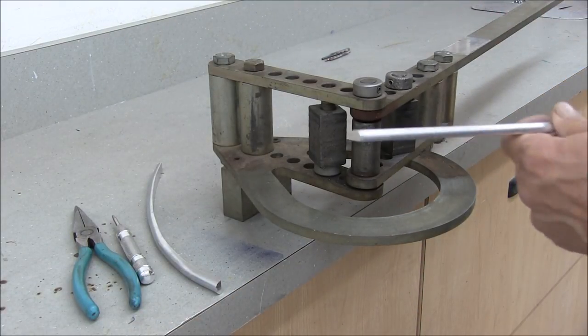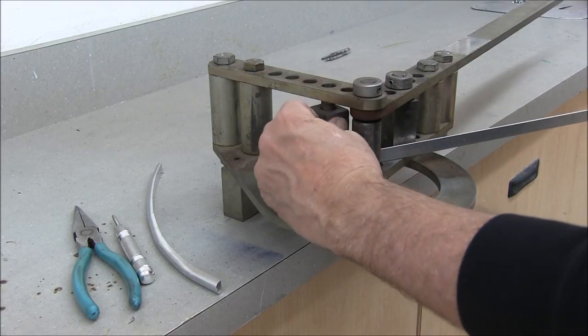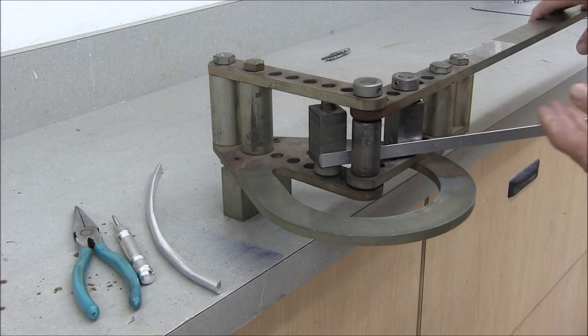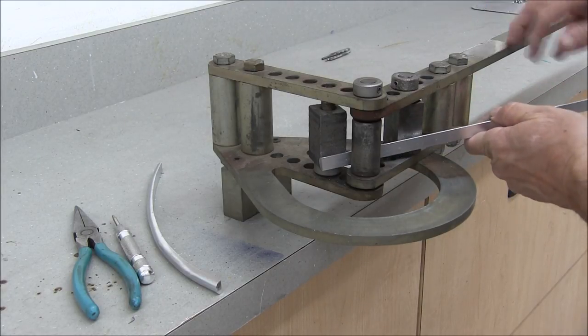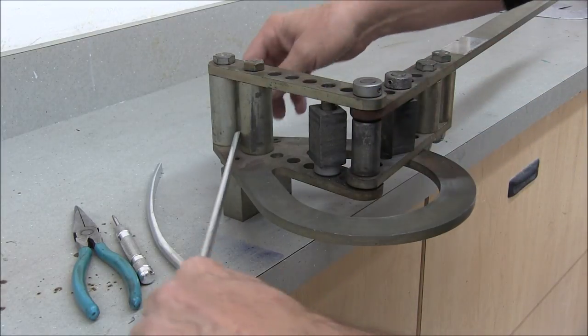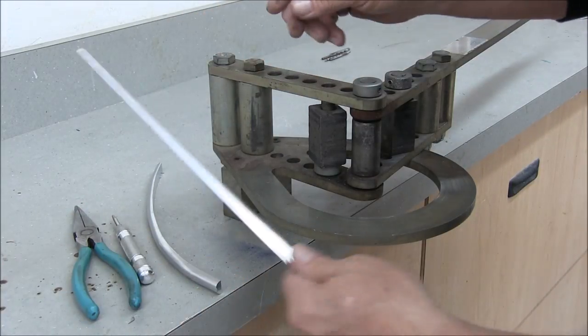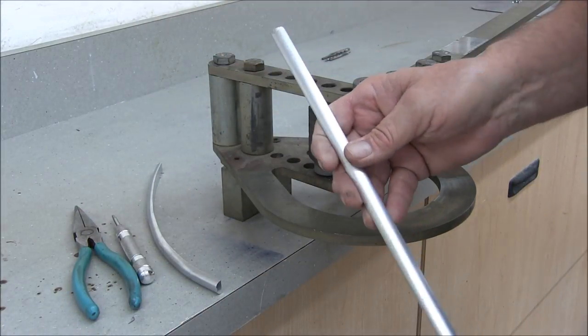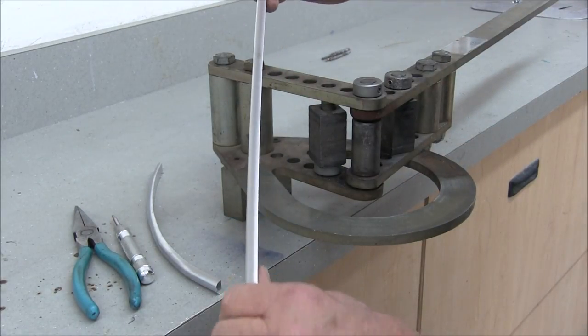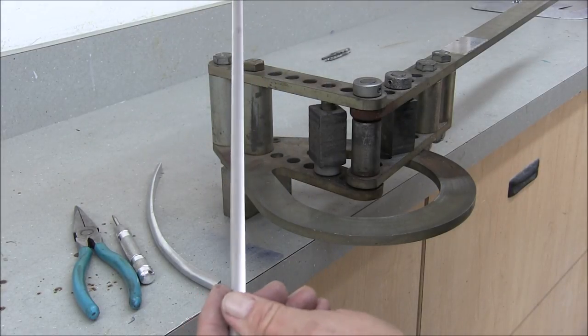This bender is a handy machine. If I need the leverage I can slip this in here and I can finesse that thing around real nice with just a little bit of pressure. If I need to bend it a little tighter in the corner I can slip it in between these two and I can work it. And for a soft arc I can just bend it over my knee.